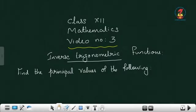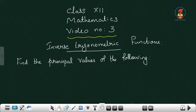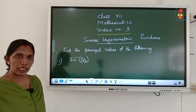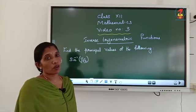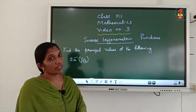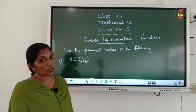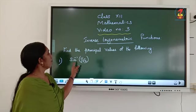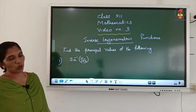Children, now we have to do problems. Find the principal values of the following. Principal values means principal values of inverse trigonometric functions. The first question is sine inverse 1 by root 2. What do you mean by principal value? The value of the inverse trigonometric function which lies in the range of principal branch is known as principal value. So, what is the principal value of sine inverse 1 by root 2?